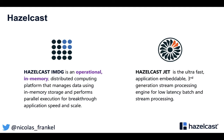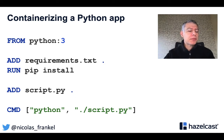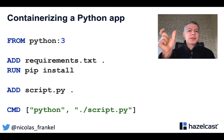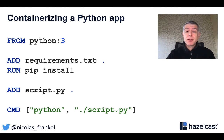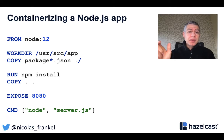Let's start with a non-Java app — a Python application. How do you containerize a Python application? It's quite straightforward. You inherit from a Python image, you add your file that contains the dependencies, you install them, you add the script itself, and then you run the script and it's done. Likewise for a Node.js application: you inherit from your Node.js base image, copy the dependencies file, install them, and run the script.